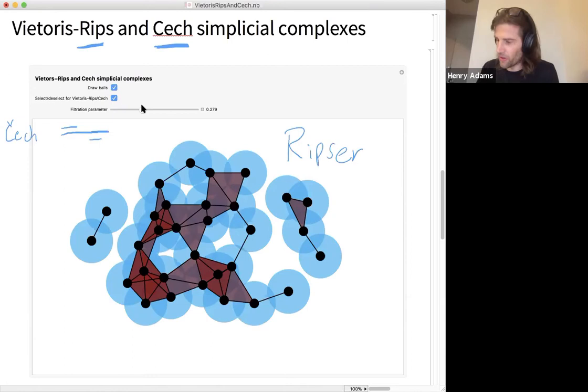Okay, now with the Vietoris-Rips complex, you won't get exactly the same bars, but they'll be relatively close, so like within a bounded error, you'll get very similar bars. So that's the reason why you use Vietoris-Rips. It's actually computable, and it gives you an approximation to the bars that you might naturally want coming from Čech.